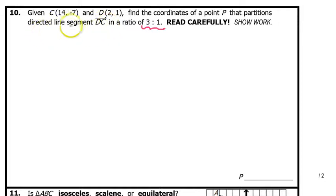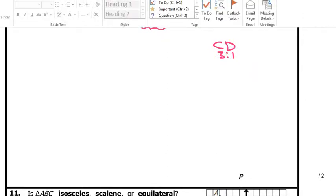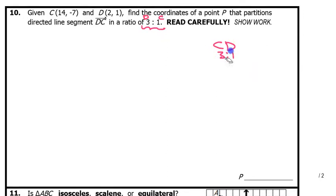So, if the directed line segment is segment DC, the first number in the ratio is the distance from D for every distance C represented by the second number. So, the first number goes with the D, and the second number goes with the C. The order matters. If this had been segment CD, then the C would have gone with the 3, and the D would go for the 1. So, that's the first thing that's very important.